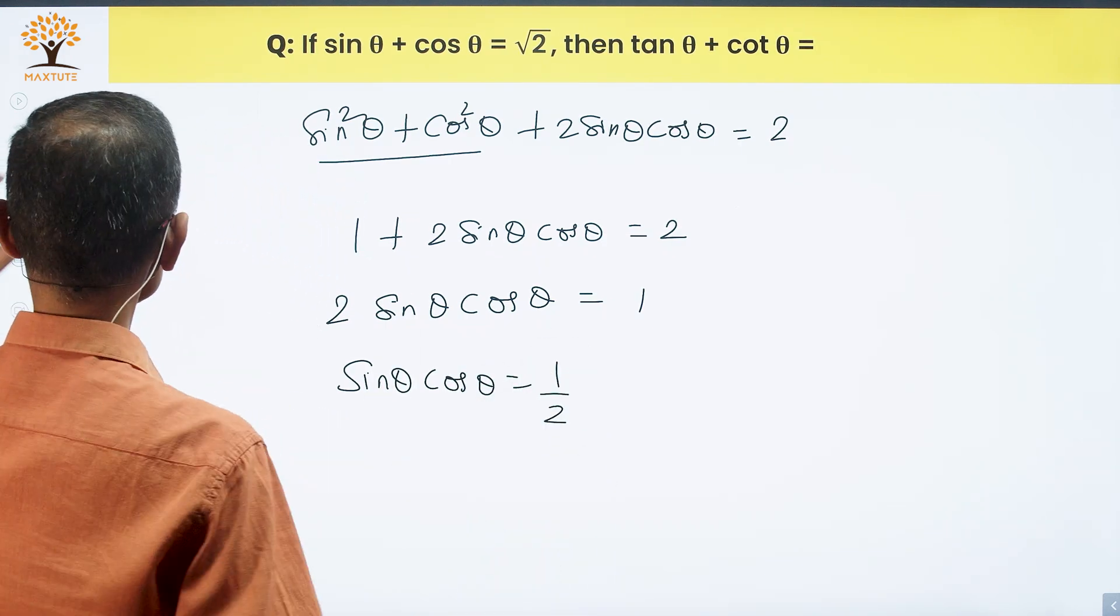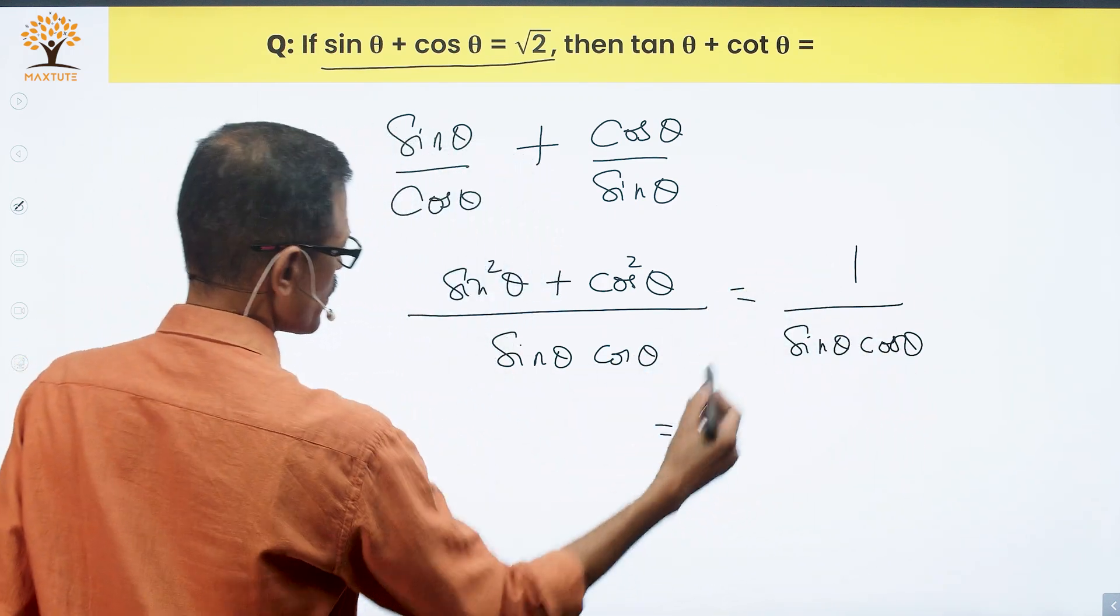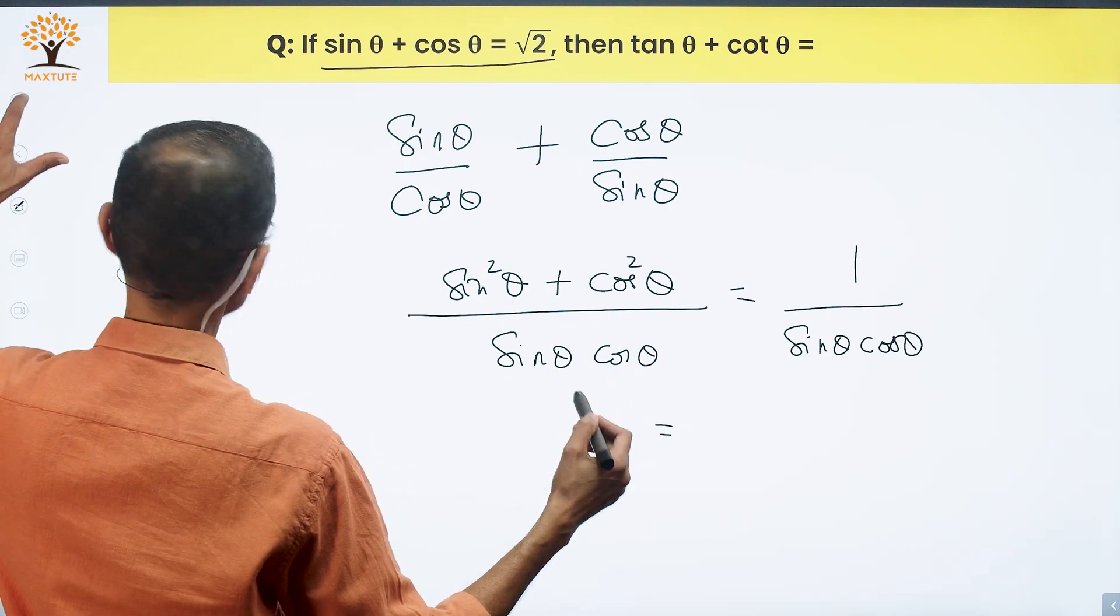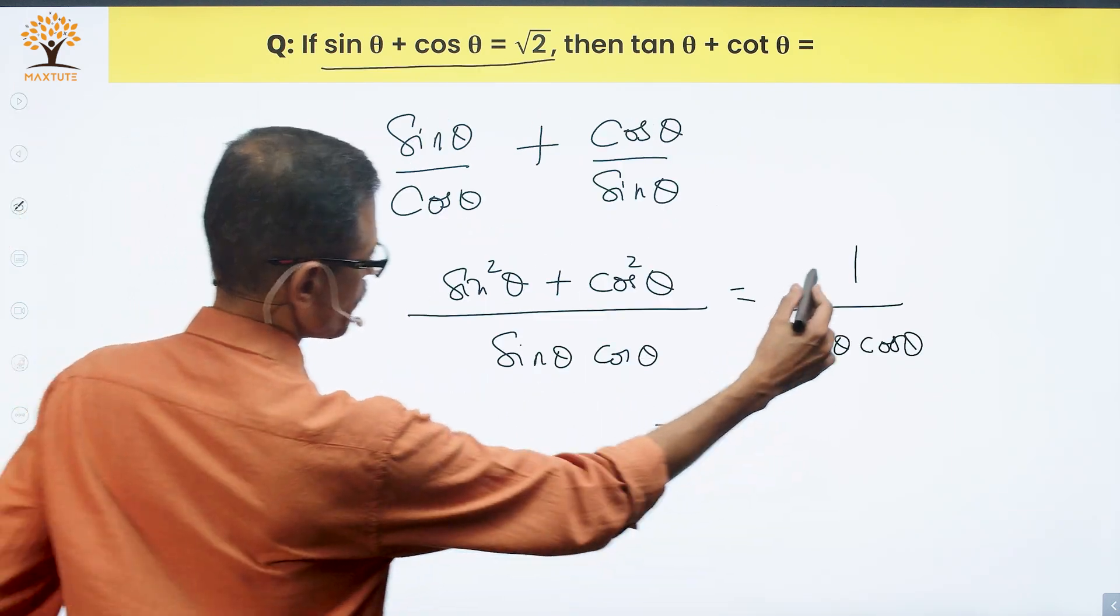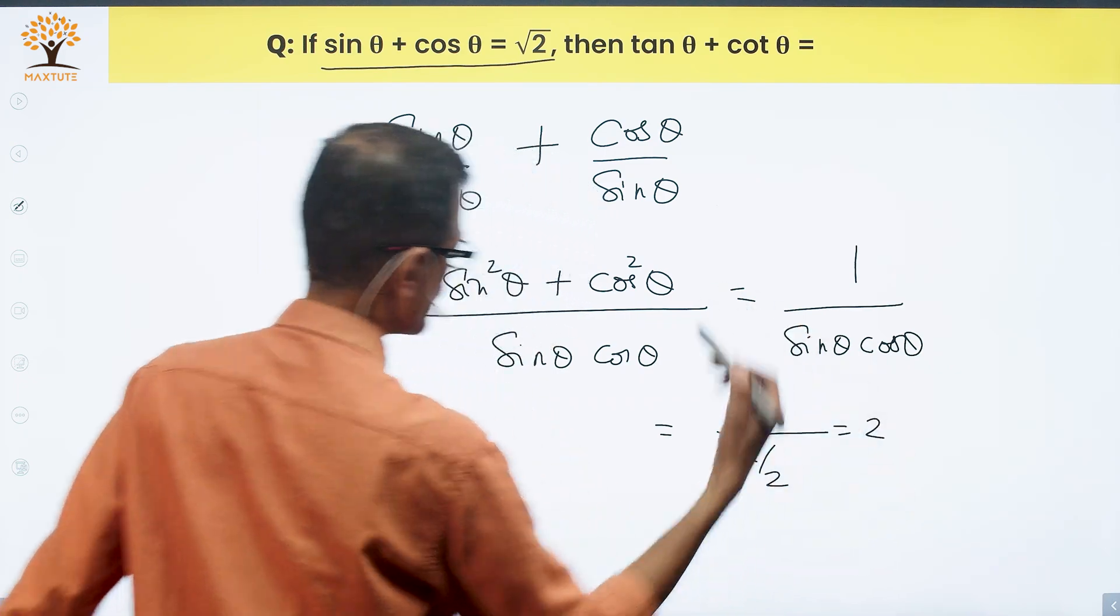So we found the value of sin theta cos theta. What do we need to find out? 1 by sin theta cos theta is what we are trying to find out. So sin theta cos theta is equal to 1 by 2. 1 by sin theta cos theta will be 1 by 1 by 2 which is equal to 2.